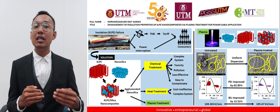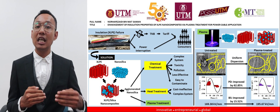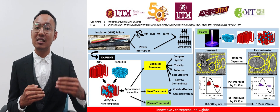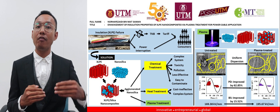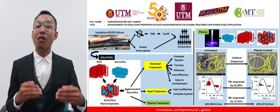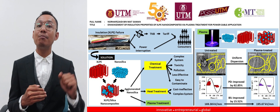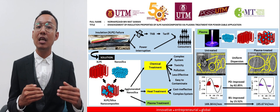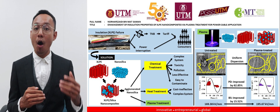However, the agglomeration of nanosilica within the XLPE is the root cause that limits the improvement of insulation properties. Conventionally, two approaches have been introduced in previous findings, which are chemical treatment and heat treatment.